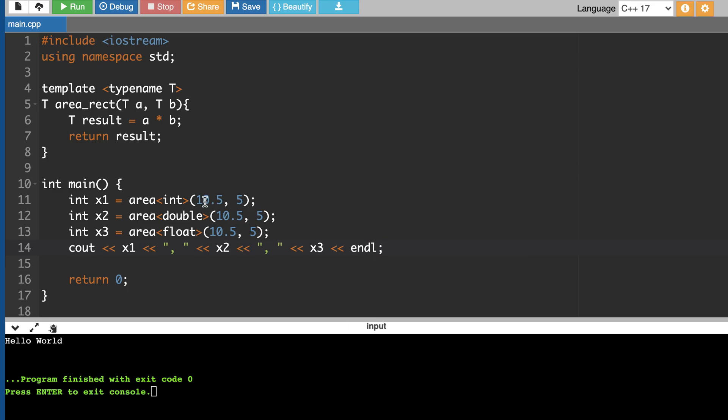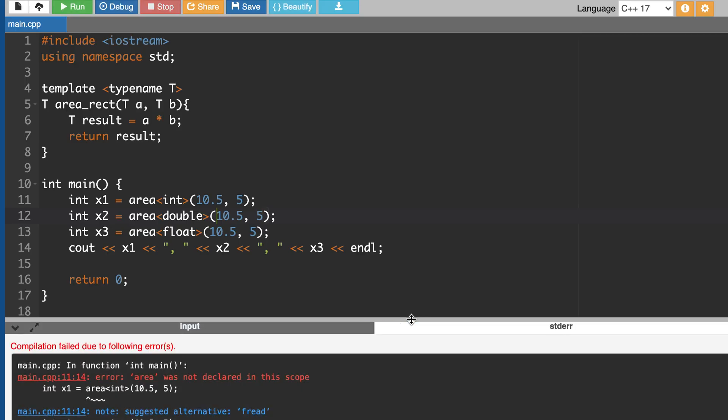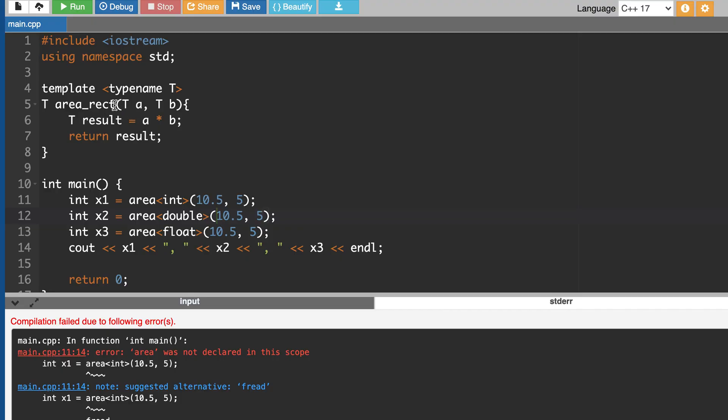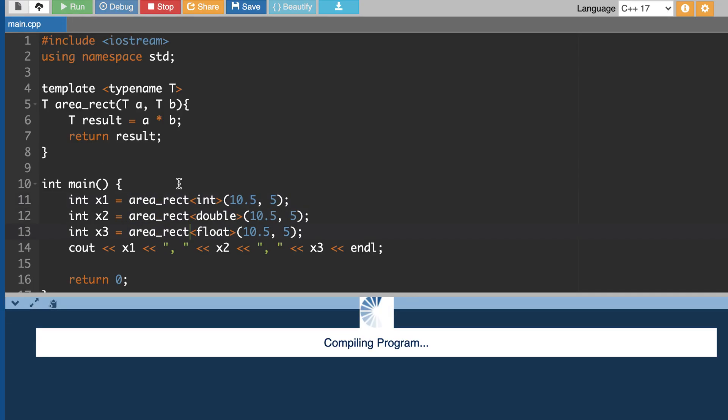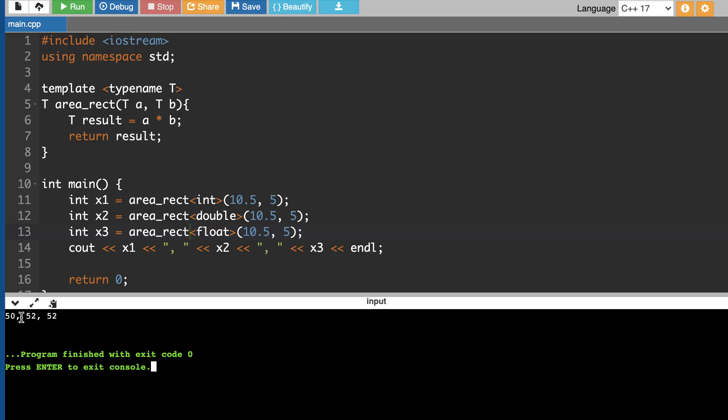Let's run it. In this case it's int so it will be converted to int, so 0.5 will be lost and it should be 50, but in the other case we will get the actual value. You can see that in the first case we get 50, so 0.5 is truncated. Then in the other two cases we get 50, 52.